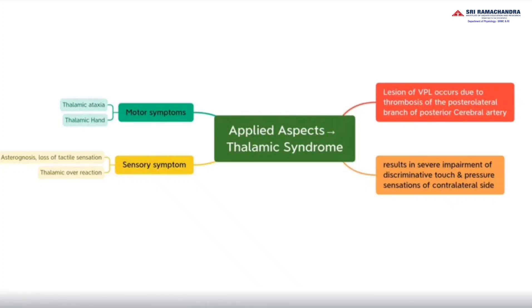A typical thalamic hand will have abnormal posture — moderate flexion of the wrist and hyper-extended fingers. Since the posteroventral nucleus of the thalamus relays skin sensation, any thrombotic blockage of the thalamogeniculate artery causes lesions to the nuclear mass, resulting in loss of light touch sensations, tactile localization and discrimination, proprioception of small movements at joints, and thalamic overreaction wherein the threshold for pain, touch, and temperature sensation is reduced, leading to hyperalgesia and allodynia — where a slight touch becomes an exaggerated and disagreeable pain or burning sensation.